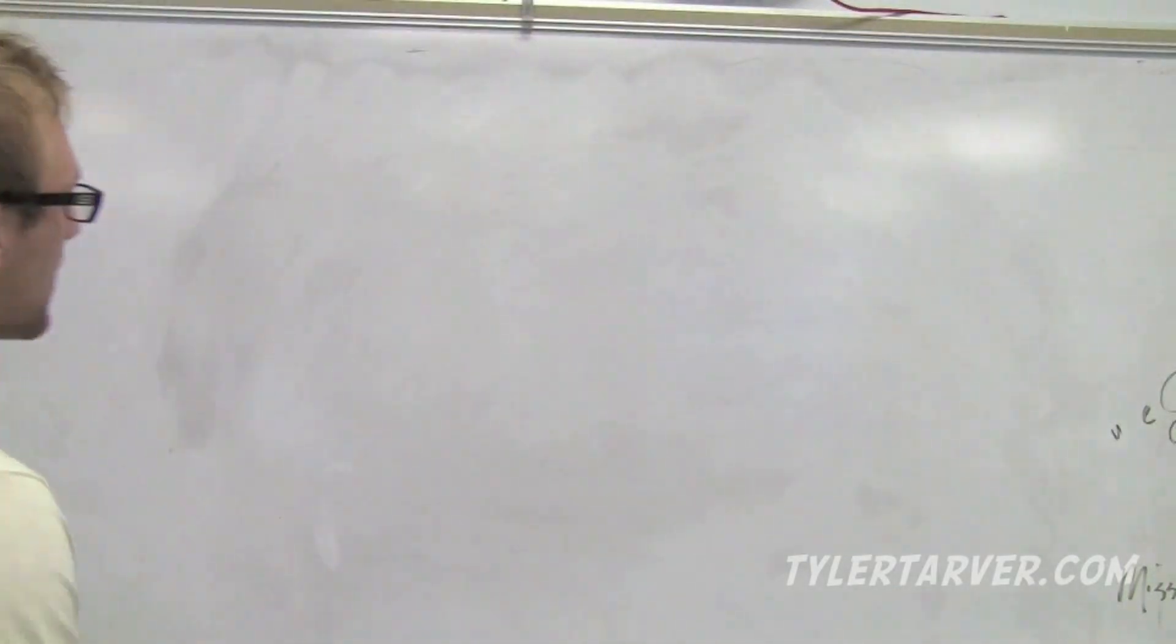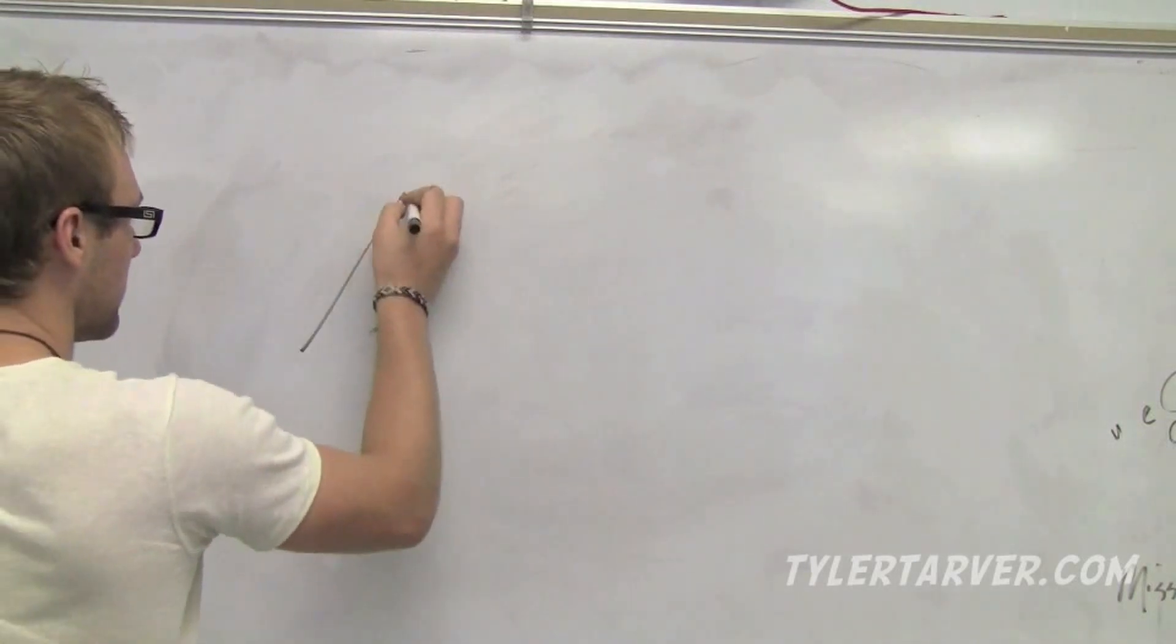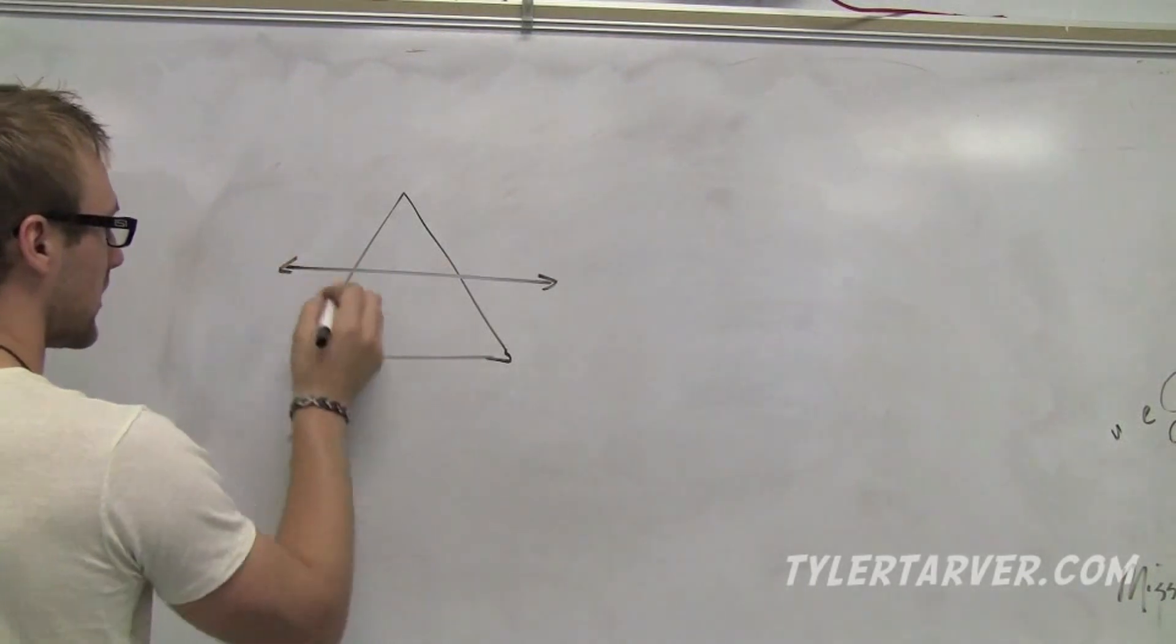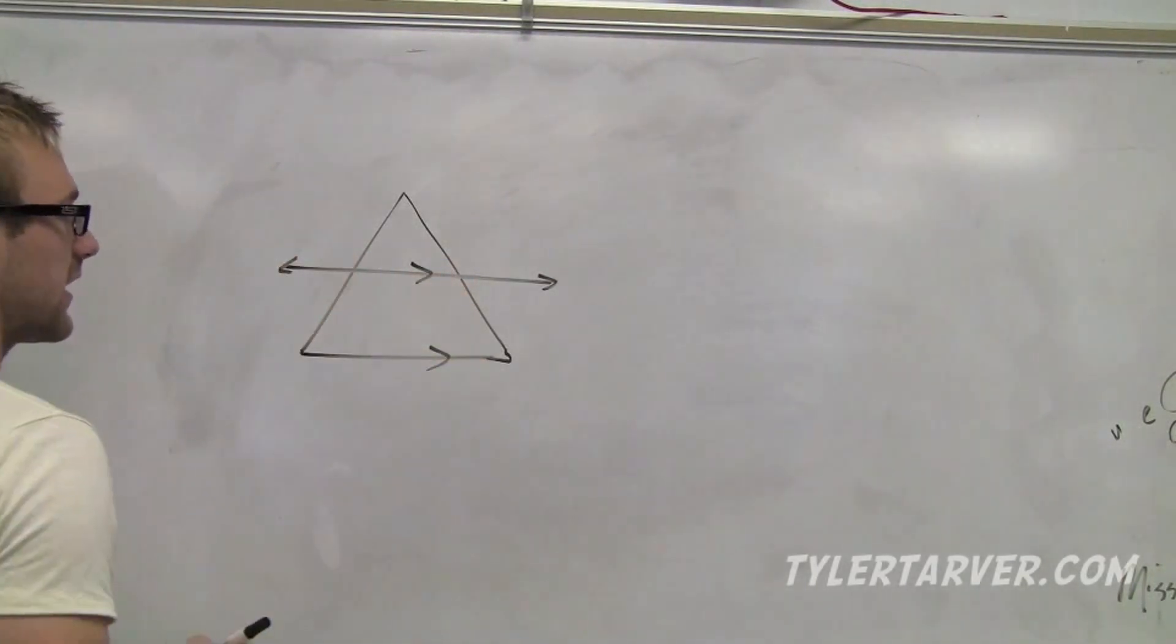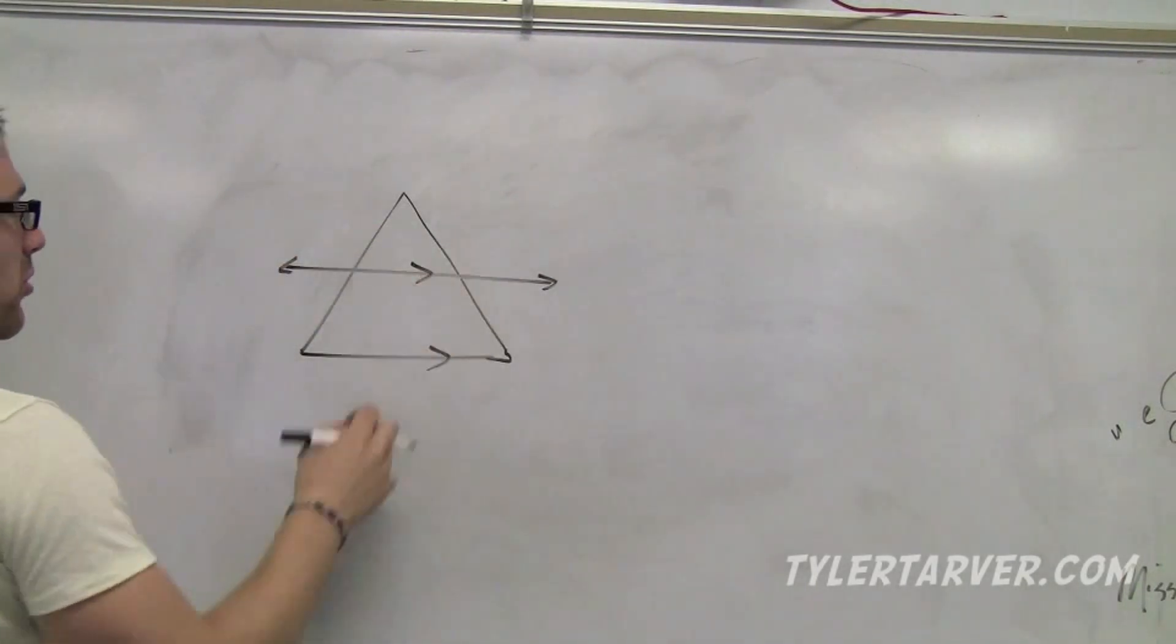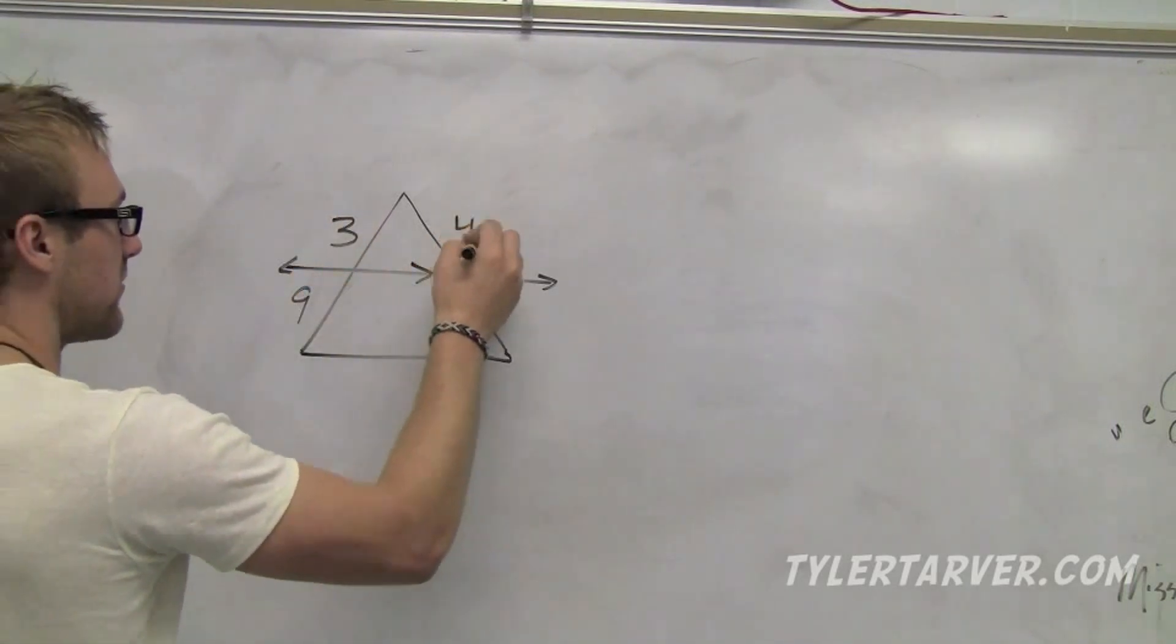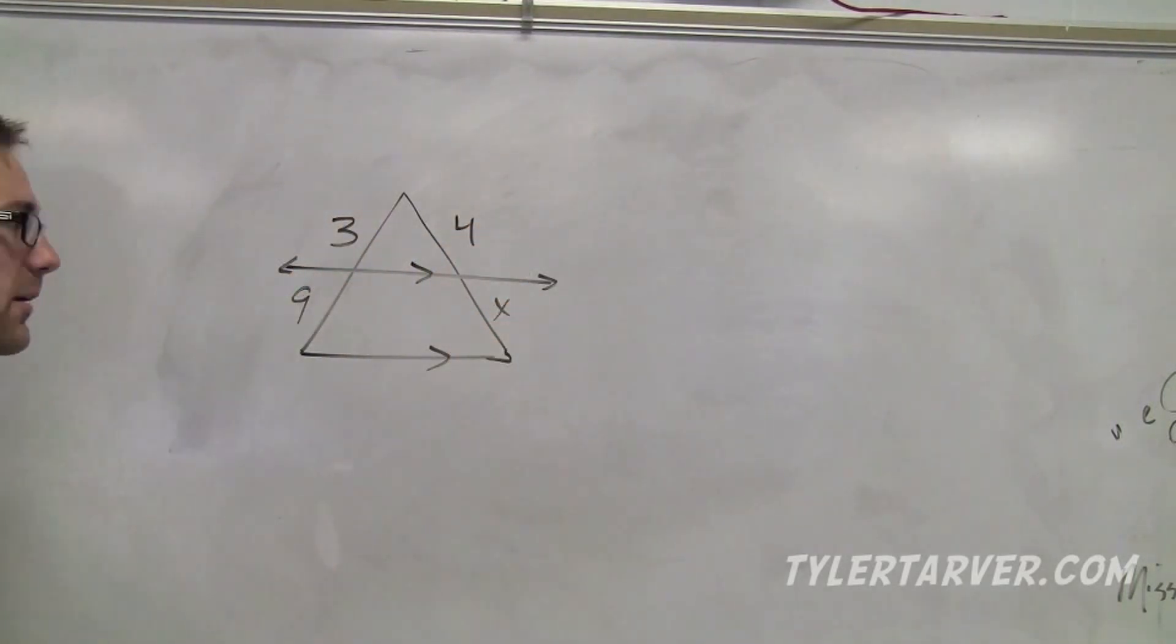First thing, if you've got a triangle and you've got a line that is parallel to one of the bases, say this is parallel to this, it cuts these proportionally. That means that if this is 3 and this is 9 and this is 4 and this is x, you can always set up a proportion.